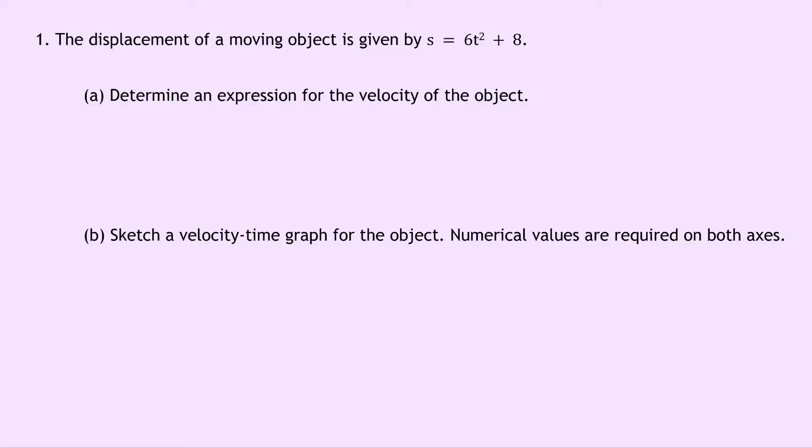So let's get started. Question 1 says that the displacement of a moving object is given by s equals 6t squared plus 8. Part A says to determine an expression for the velocity of the object. Well, remember to get the velocity we need to differentiate the displacement s with respect to time. So if we write down our displacement first of all, we've got s equals 6t squared plus 8. So if we write down our expression for velocity we have v equals ds by dt which is equal to 12t in this case.